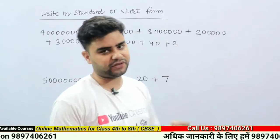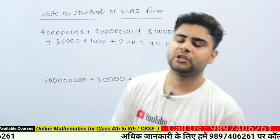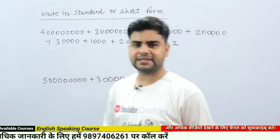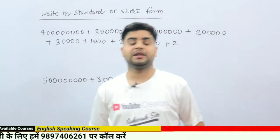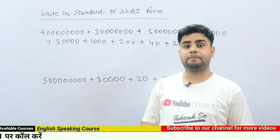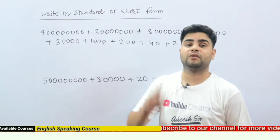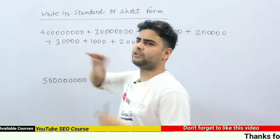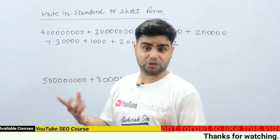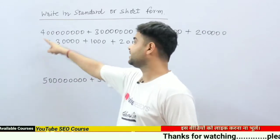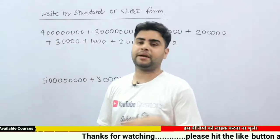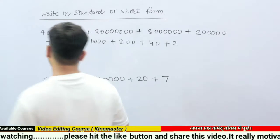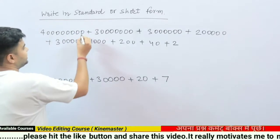Now I am going to tell you the second method. This is also very impressive and very important. In this method, first of all we will find the place value of each number. For example, what is the place value of 4? We will find it by counting.